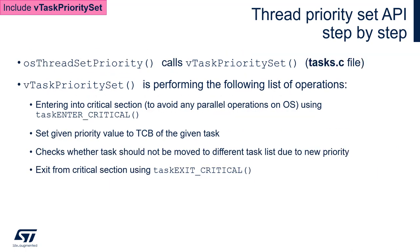Let's have a closer look at the function dedicated to setting the priority for a given task. Within CMSIS OS API v2, we have a dedicated function called osThreadSetPriority, which calls vTaskPrioritySet from the FreeRTOS API. This is not a mandatory function within FreeRTOS, which is why we need to include vTaskPrioritySet within the FreeRTOS configuration file before using this function. vTaskPrioritySet is defined within the tasks.c file, where you can see the body of this function.